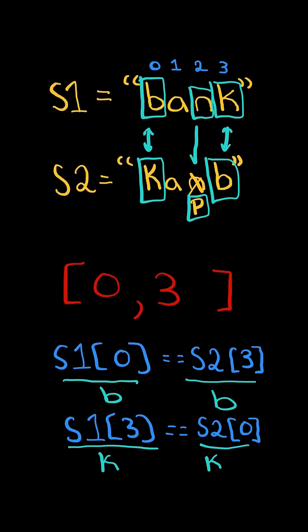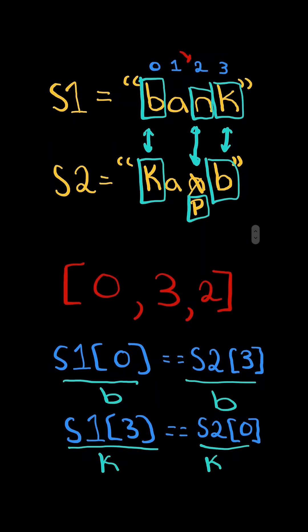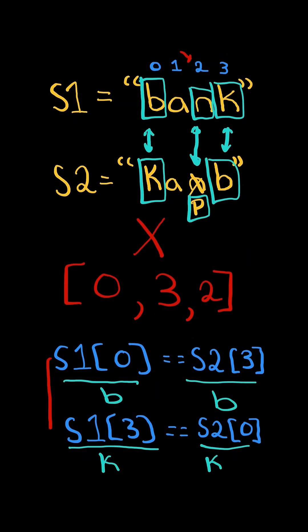Consider this other example. Now the characters are not equal at this index, so we add the index to our list. If the length of our list is greater than two, then we return false, because a single swap would not be enough to make s1 equal to s2.